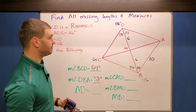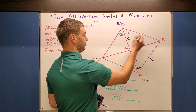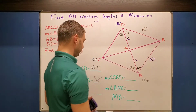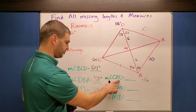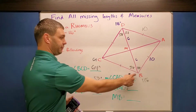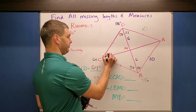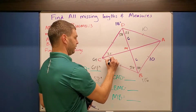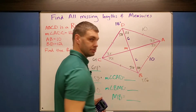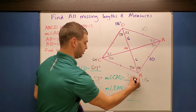Next it says AD. Since this is a rhombus, all sides are congruent — I can put tick marks to show that. Since AB is 10, AD would also be 10. Next is CAD. Just like we found 58 by dividing 116 by 2, I'm going to take 64 and divide by 2. That is 32 degrees for both of these angles, as well as both of the opposite ones. So CAD is 32 degrees.